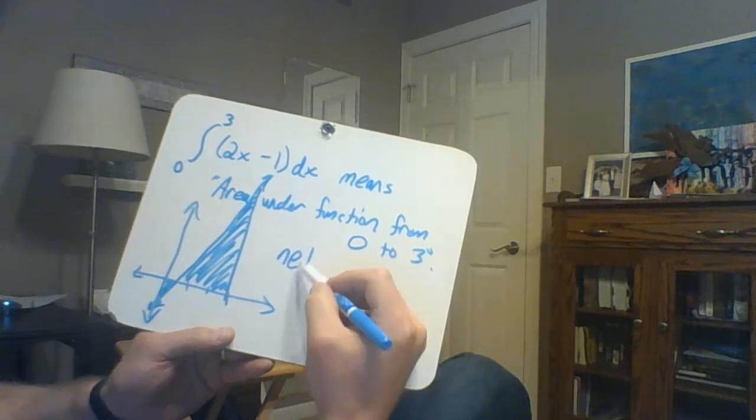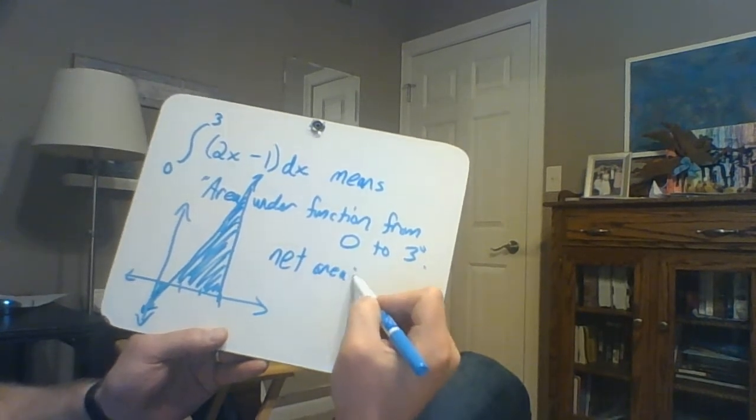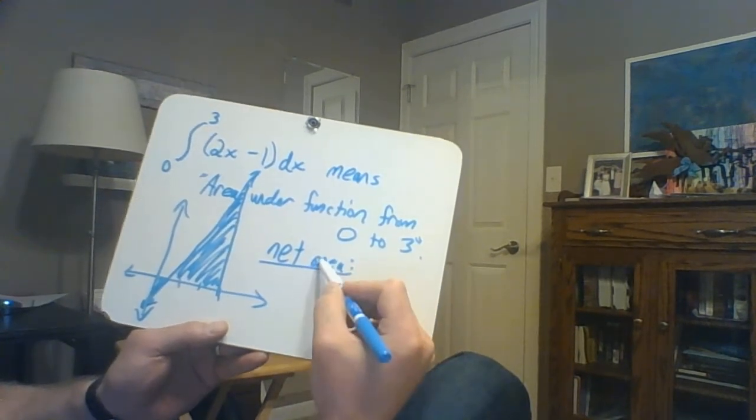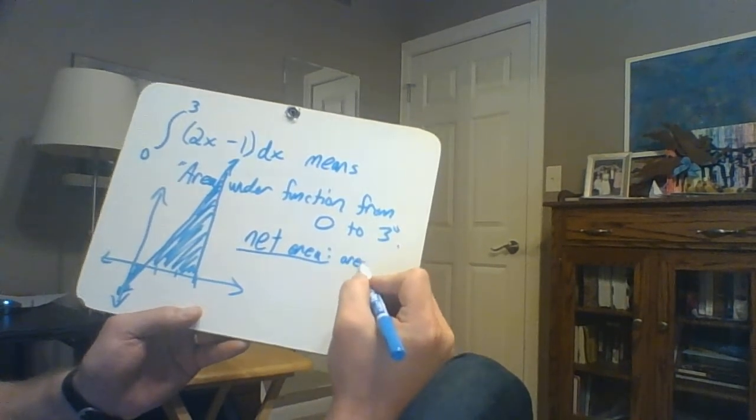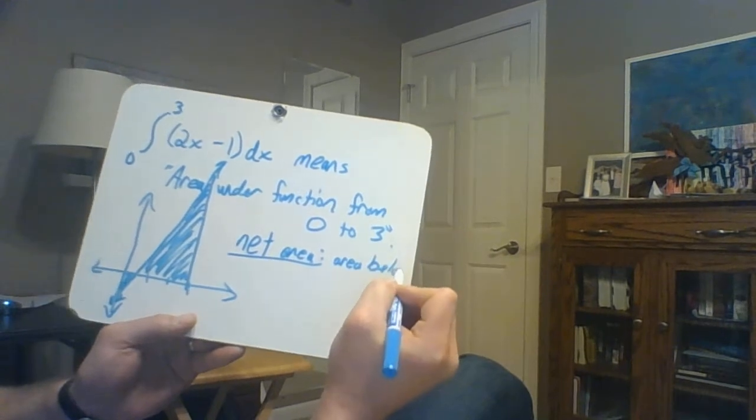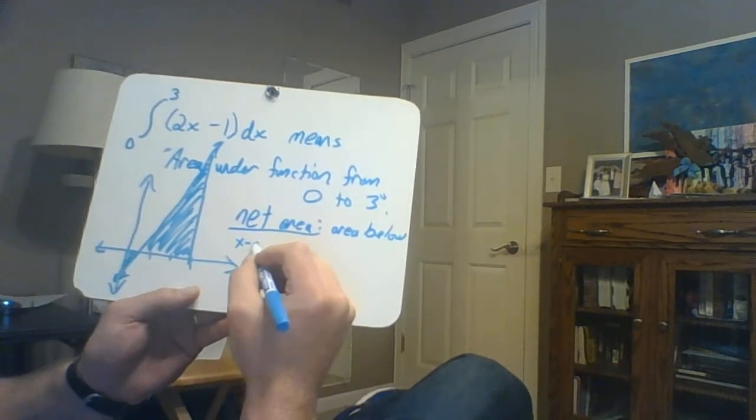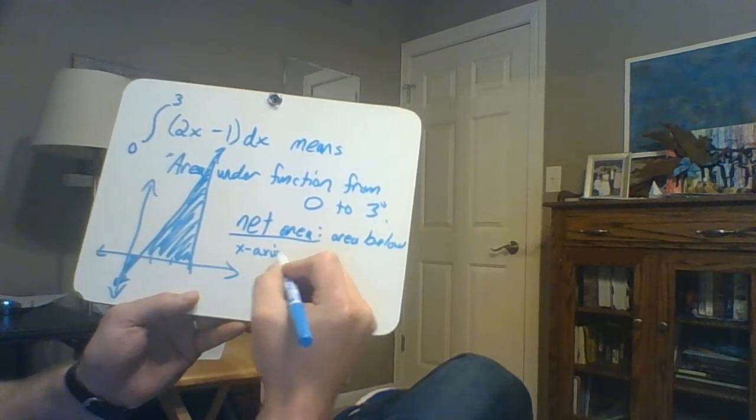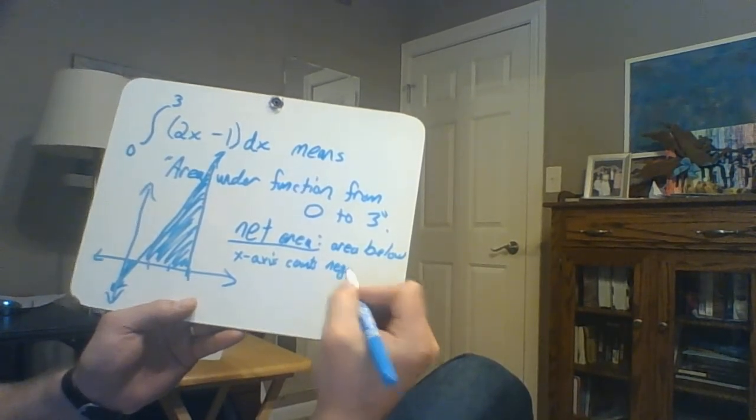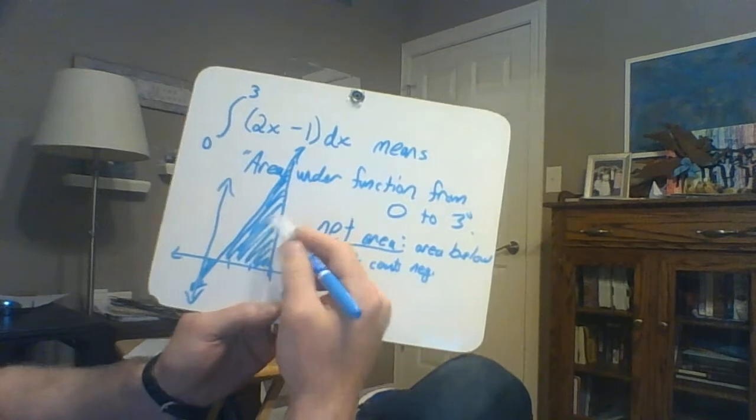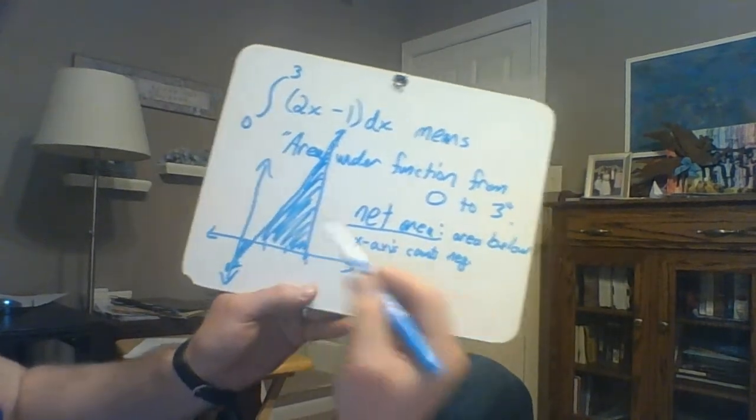If we talk about the net area, if they want the net area, that means that any area below the x-axis counts negative. So this is positive, but down here, this is negative area.